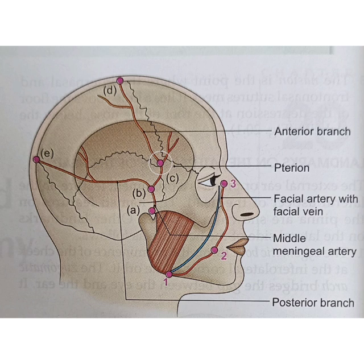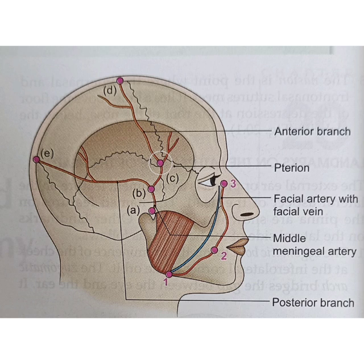Point E is 6cm above the external occipital protuberance. The line joining points A and B represents the stem of the middle meningeal artery inside the skull. The line joining points B, C, and D represents the anterior frontal branch, which first runs upwards and forwards (B to C), then upwards and backwards towards point D. The line joining points B and E represents the posterior parietal branch, running backwards and upwards.